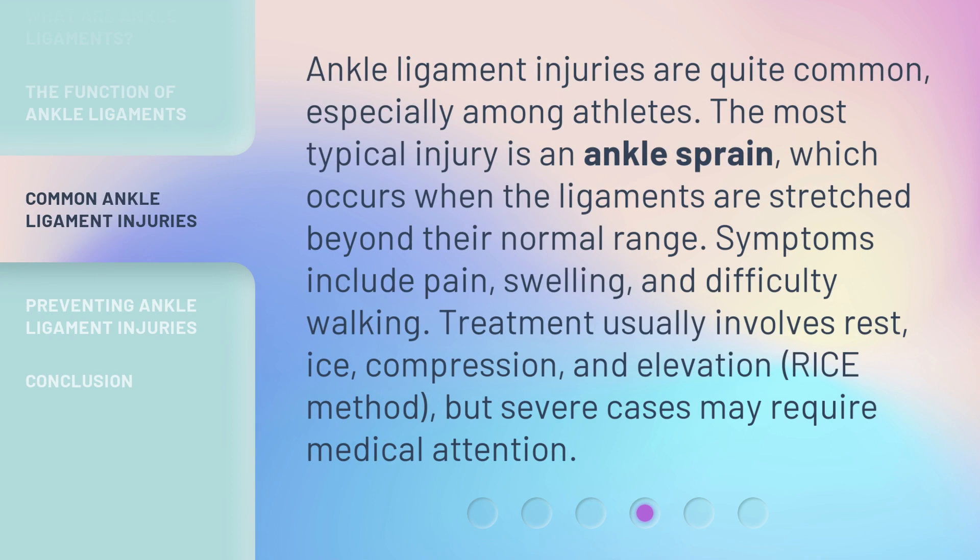Ankle ligament injuries are quite common, especially among athletes. The most typical injury is an ankle sprain, which occurs when the ligaments are stretched beyond their normal range. Symptoms include pain, swelling, and difficulty walking. Treatment usually involves rest, ice, compression, and elevation — the RICE method — but severe cases may require medical attention.